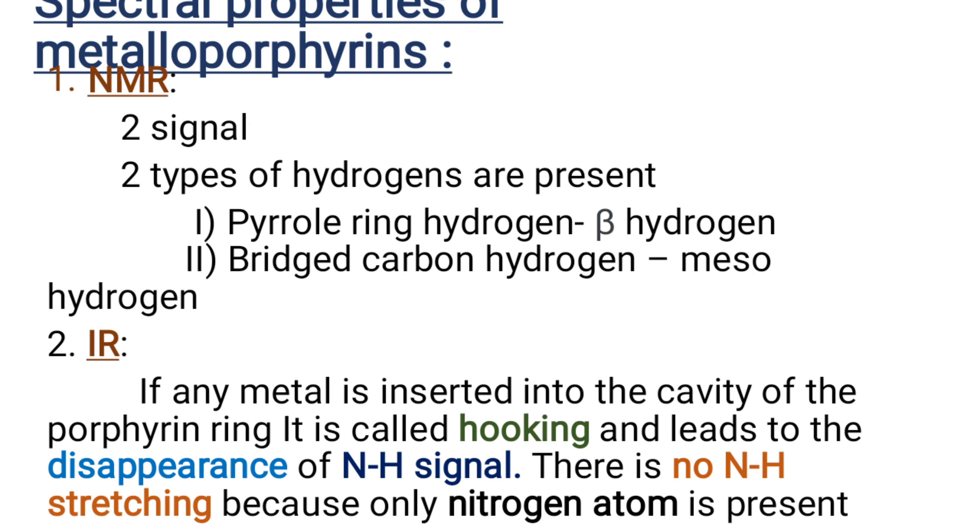Next, the IR spectrum for metalloporphyrin complex. In IR we don't have peaks because of the absence of NH bond. The hooking process of metal in the cavity of the porphyrin leads to the disappearance of NH signal. There is no NH stretching because only nitrogen atom is present.